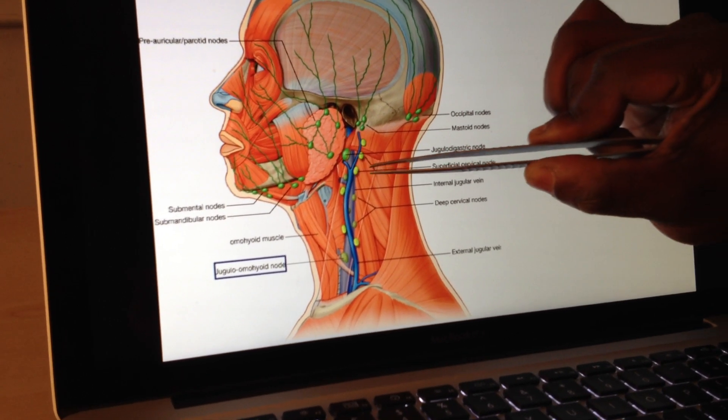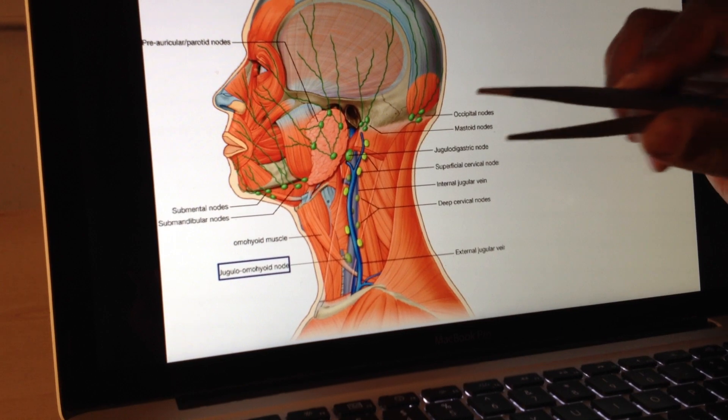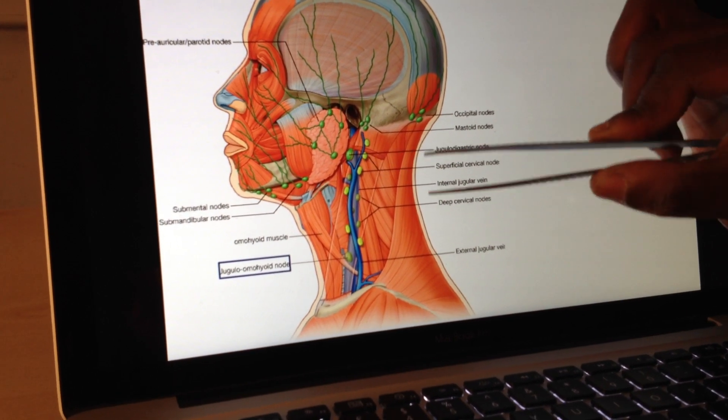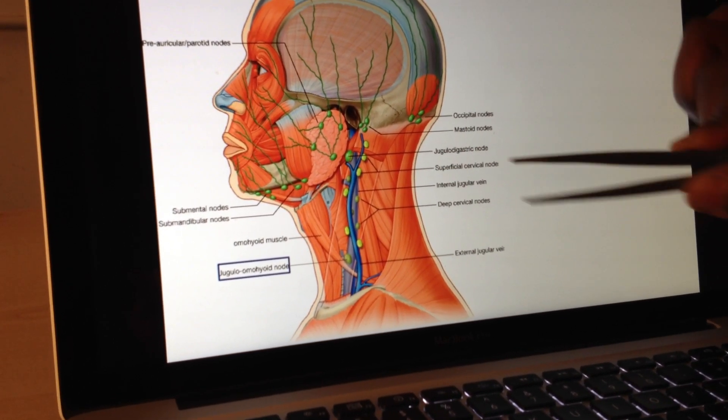If we drop down, we're down into the cervical area. Remember, cervical means neck. This is the neck region. This is the most superficial one, superficial cervical node.